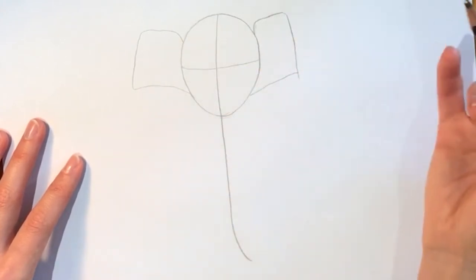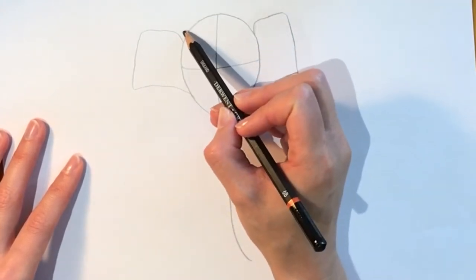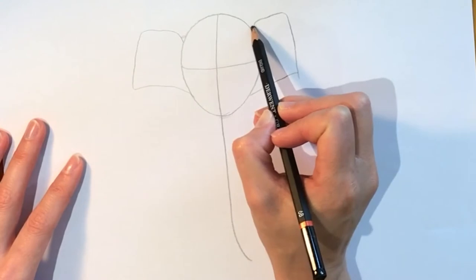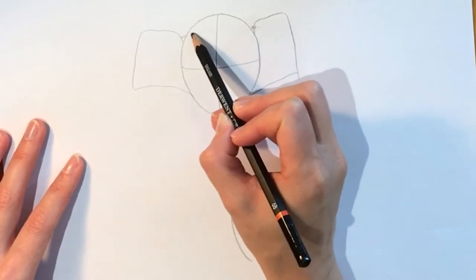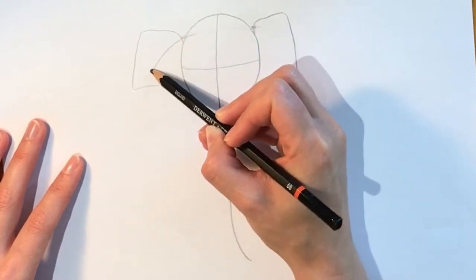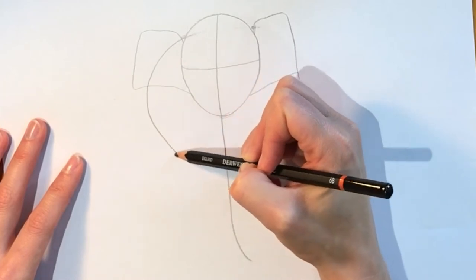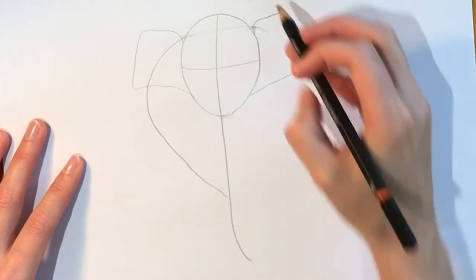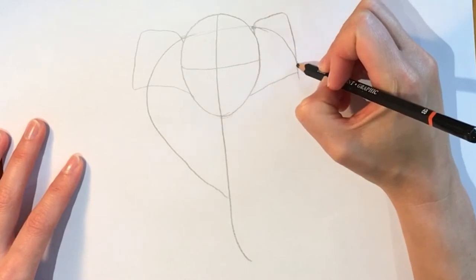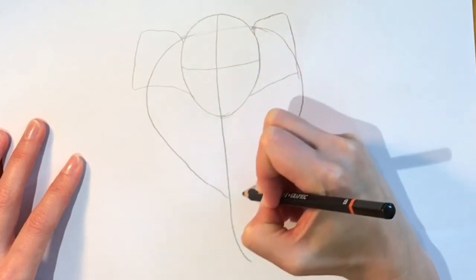Now we're going to be doing what I can only describe as an upside down drop shape. So starting at the top of the ears, do this upside down drop shape coming down like so, and on the other side as well. It's going to be the elephant's body.